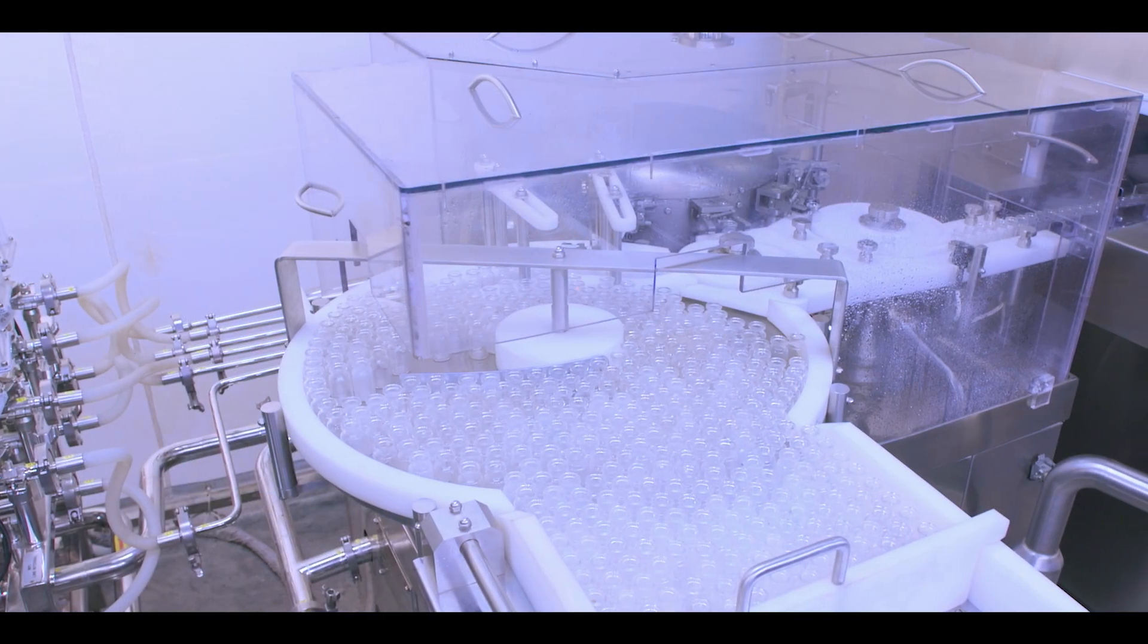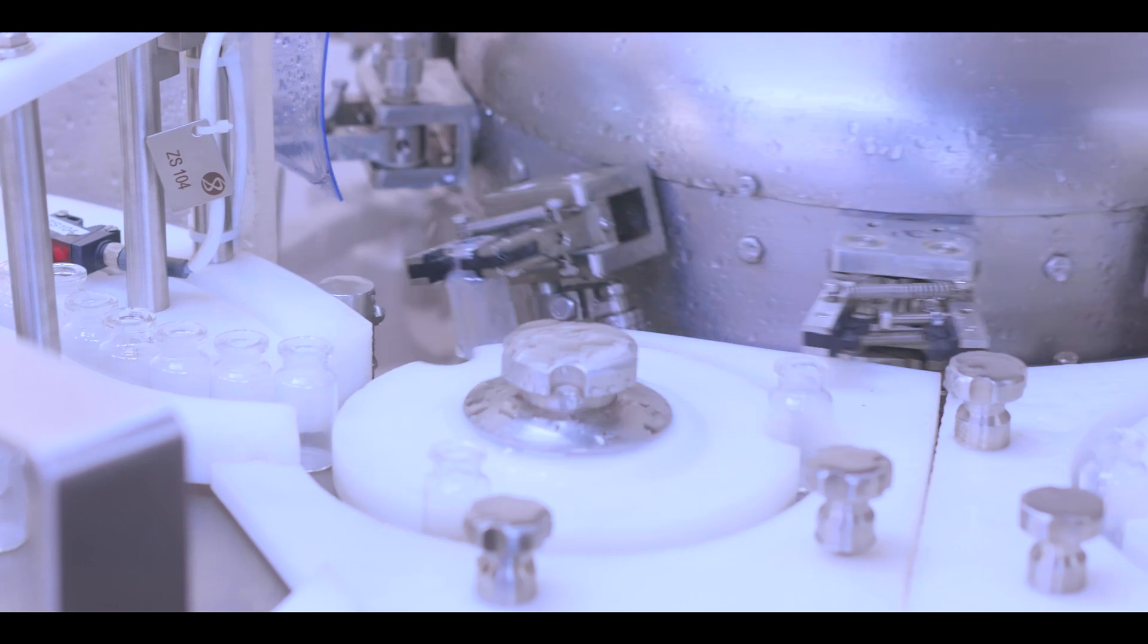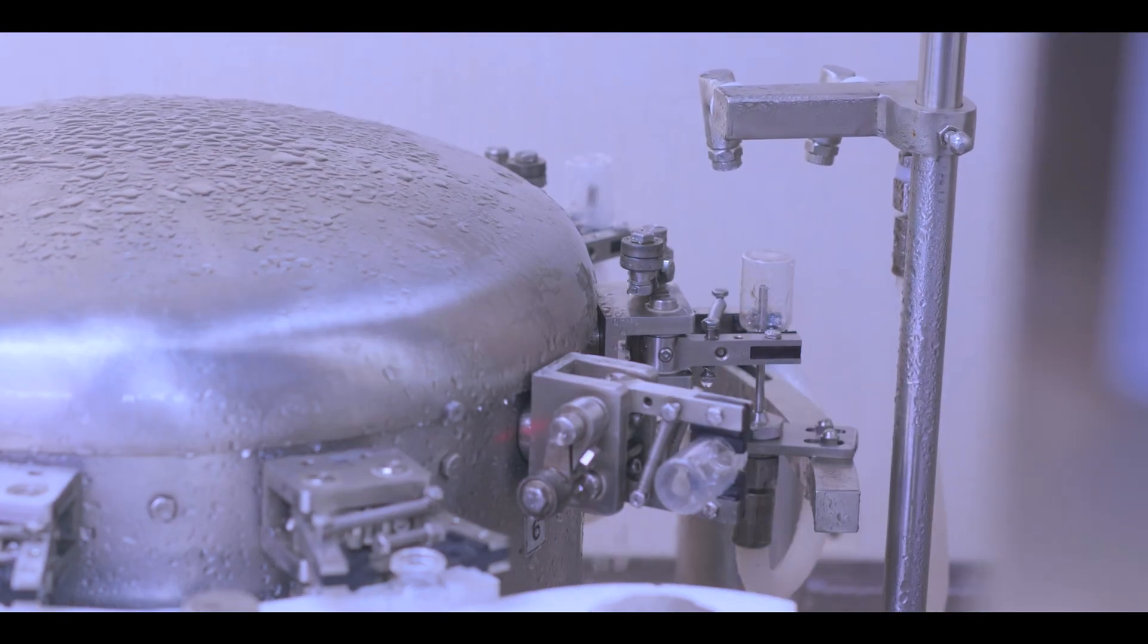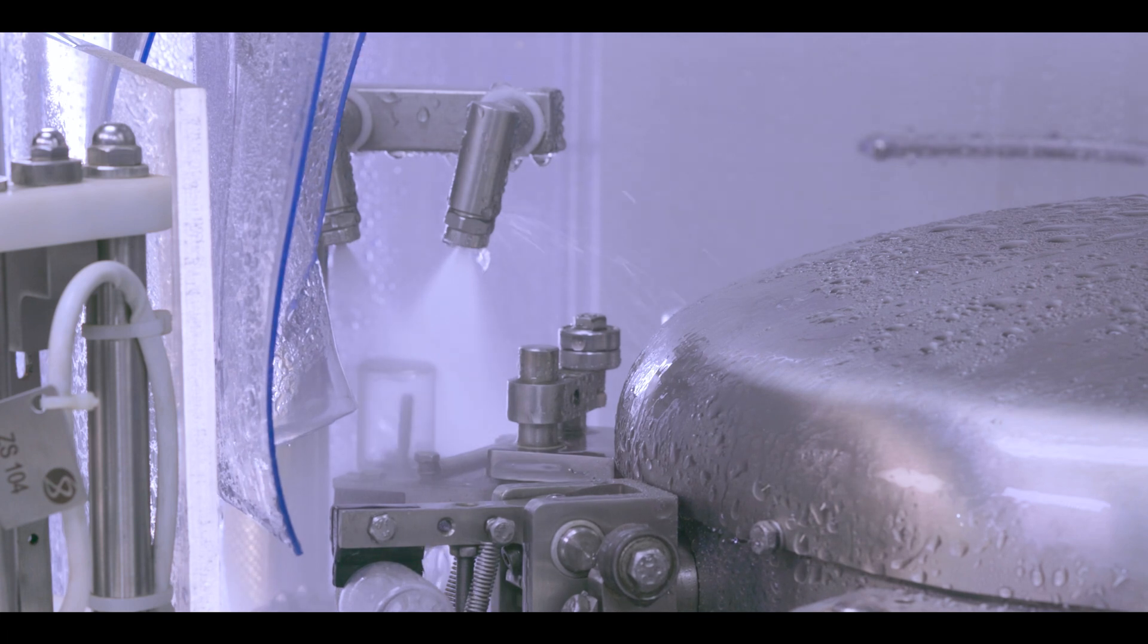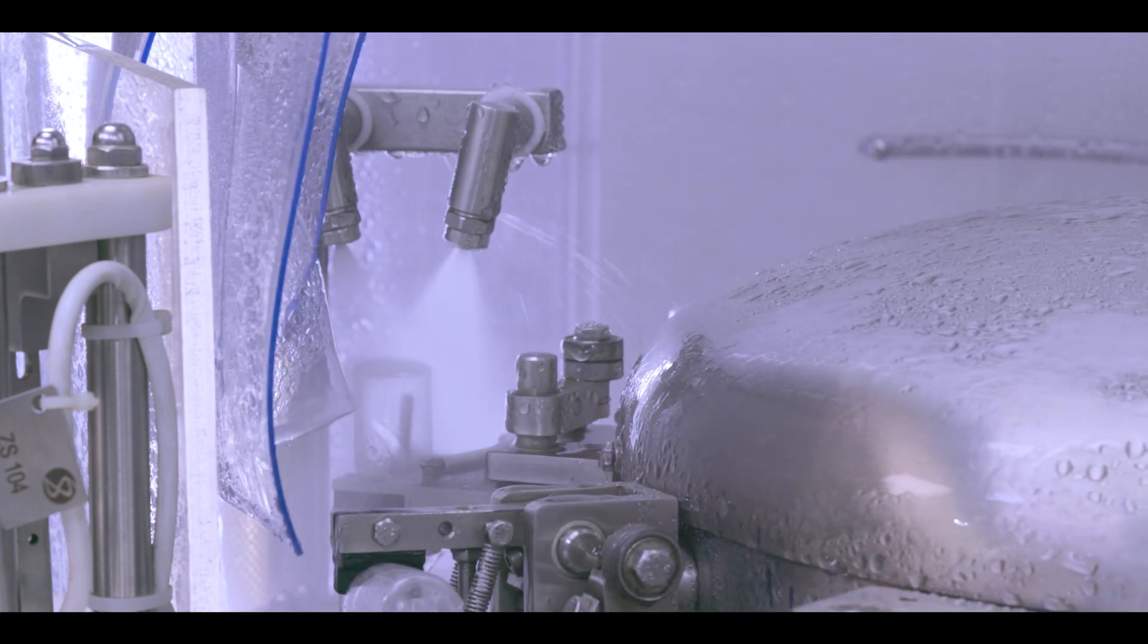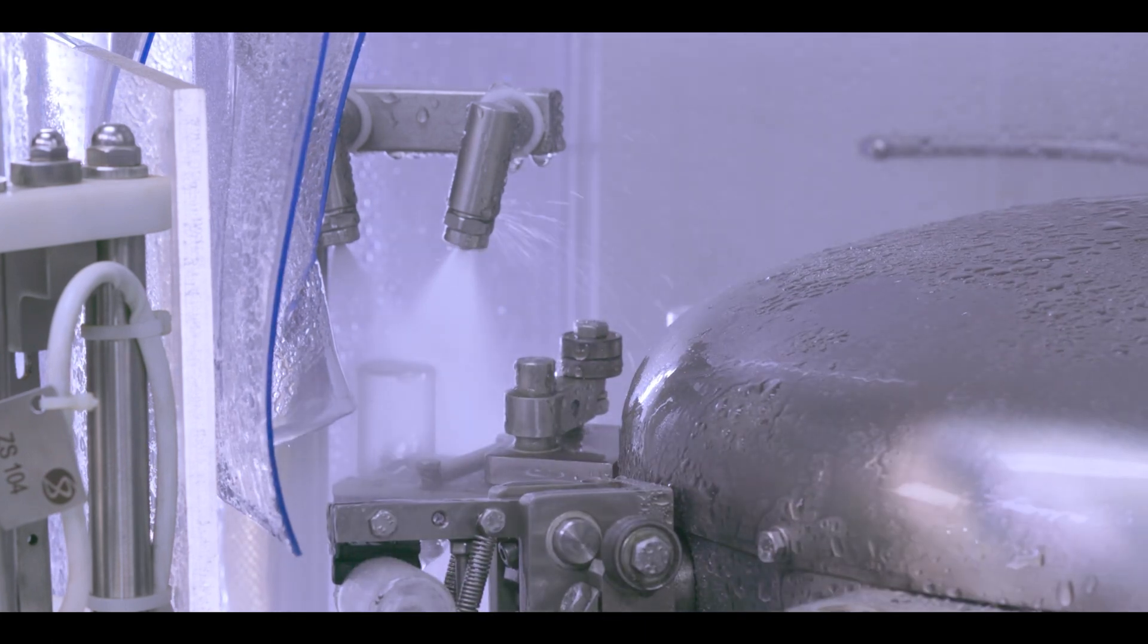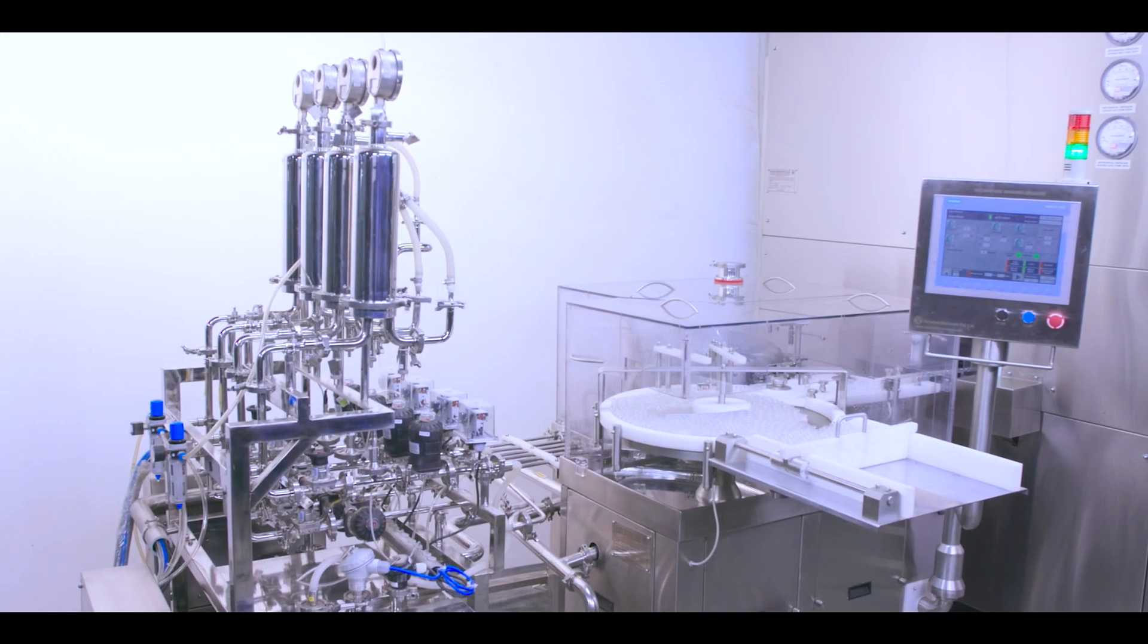A vertical rotary vial washing machine washes the vials that are manually fed to an infeed turntable. The vials are cleaned internally and externally with recirculated water, purified water, water for injection, and compressed air.